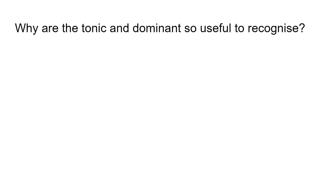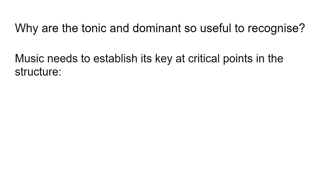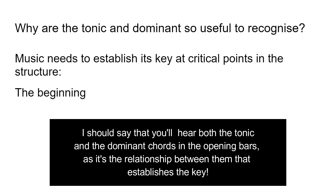So why do we need to recognize the tonic and dominant when looking at a piece of classical music or working out chords in a song? The first reason is that music needs to establish its key at critical points in the structure. When we're listening to a piece of music, our ear needs a certain consistency — it needs to be able to expect and have those expectations fulfilled in terms of what it's going to hear and how the music is structured. At the beginning of a piece of music you're going to hear the tonic chord, establishing the key so that we know what to expect in the rest of the piece.